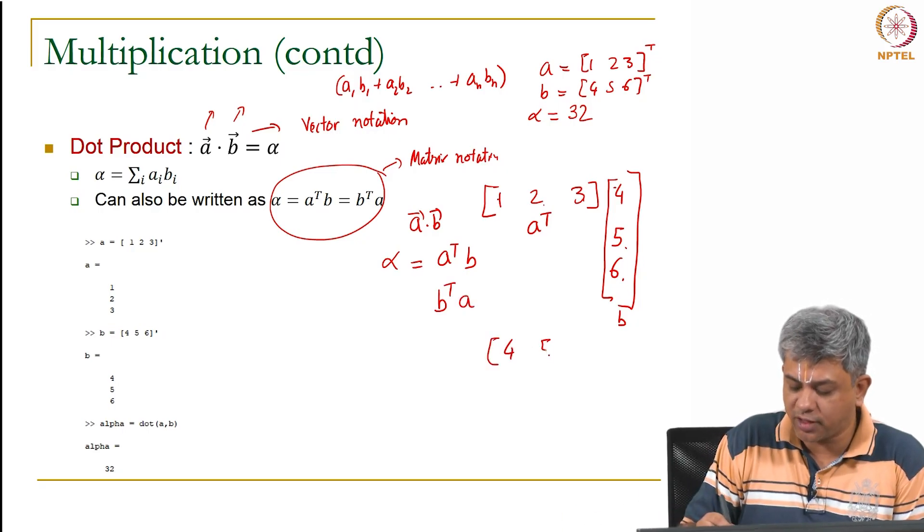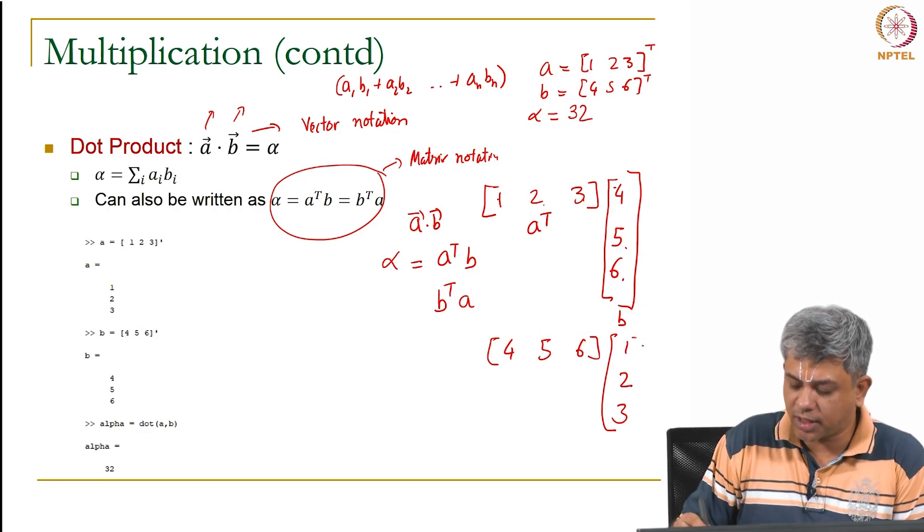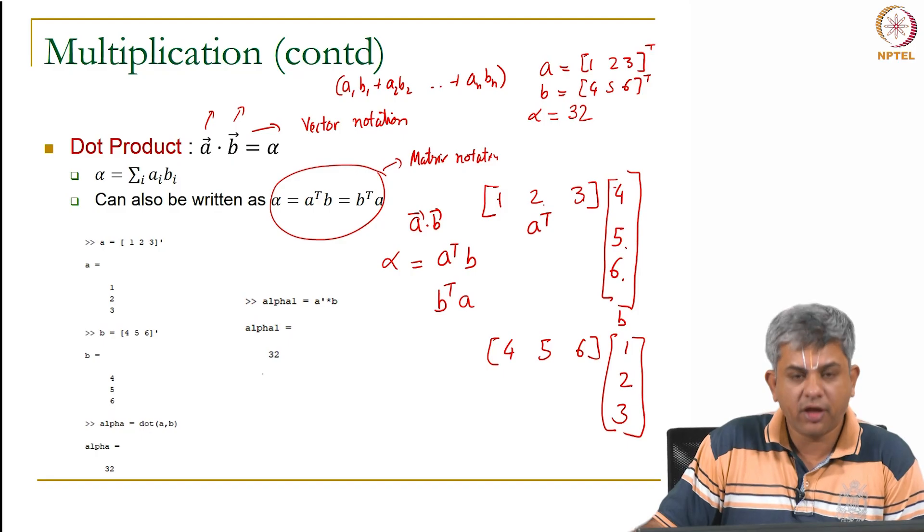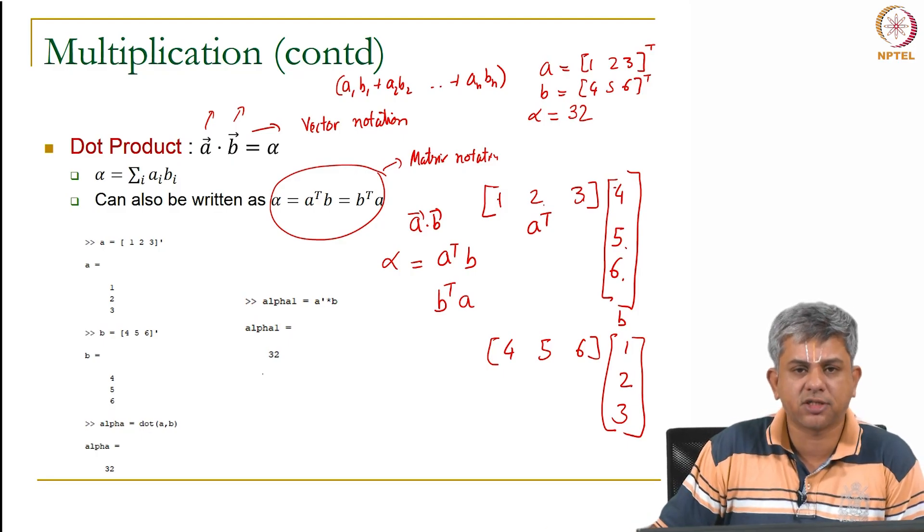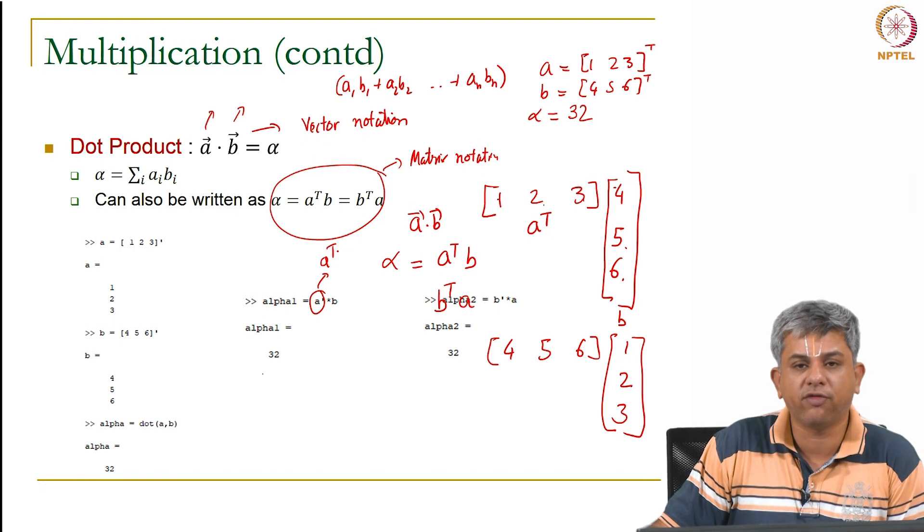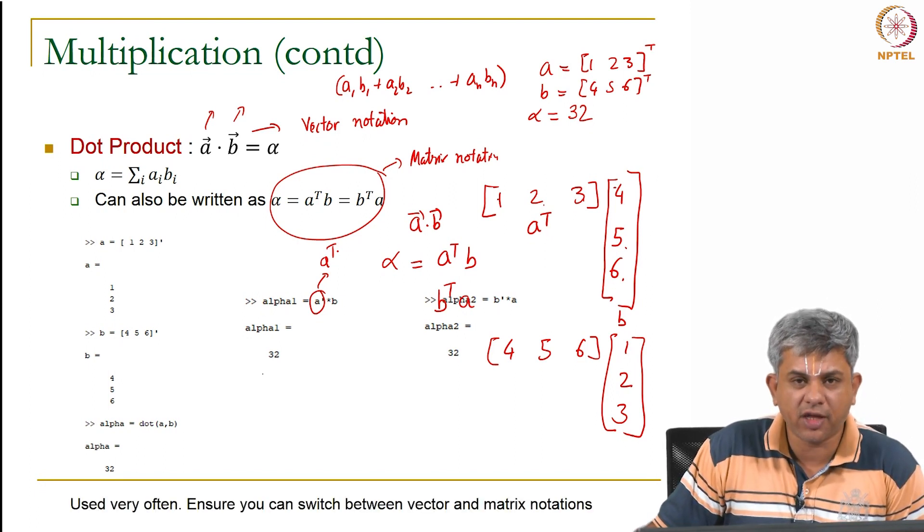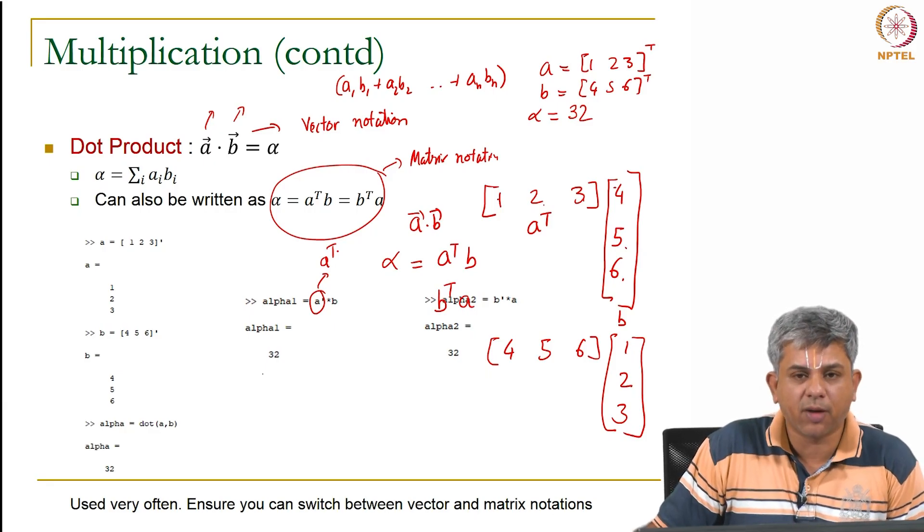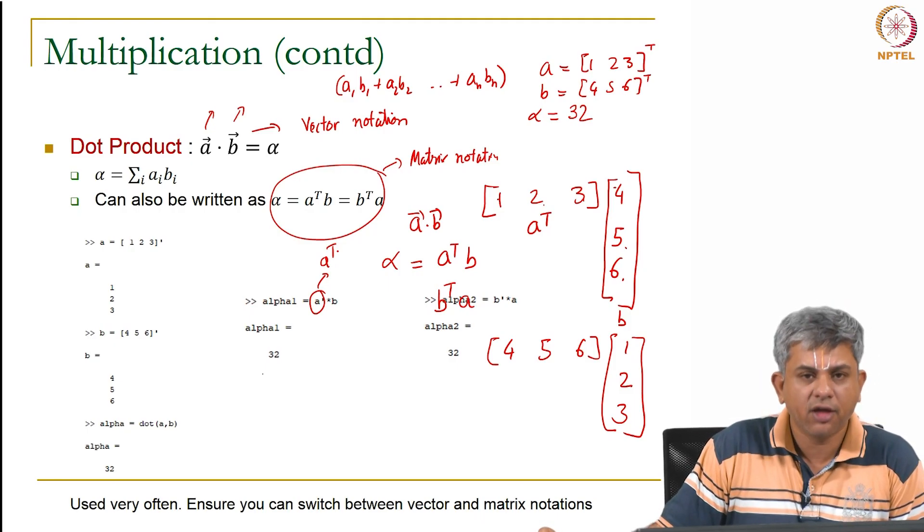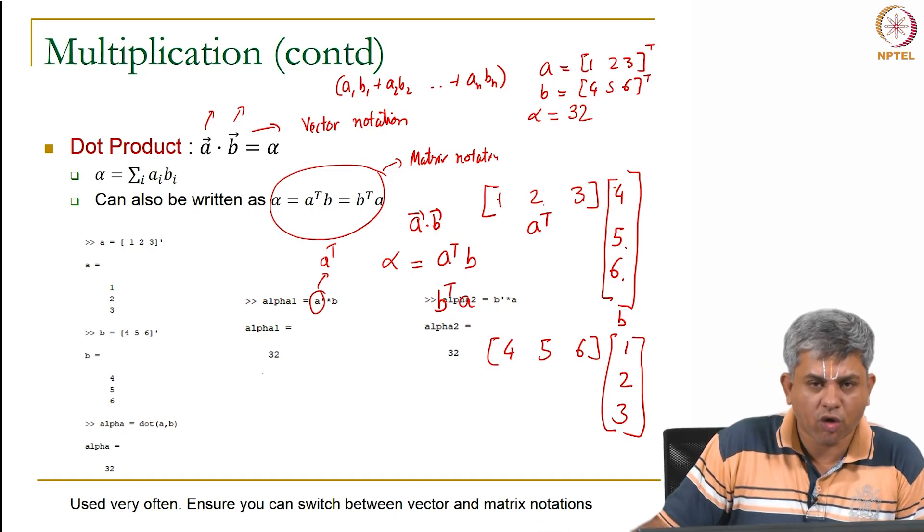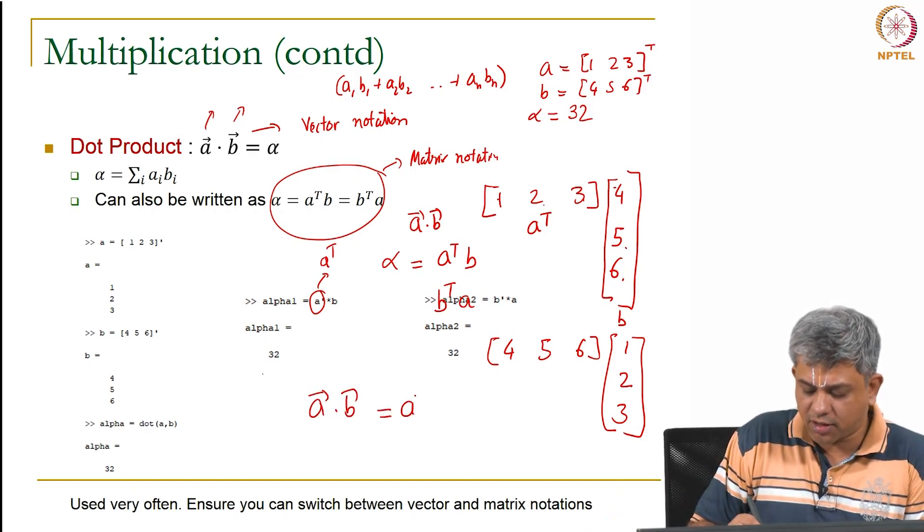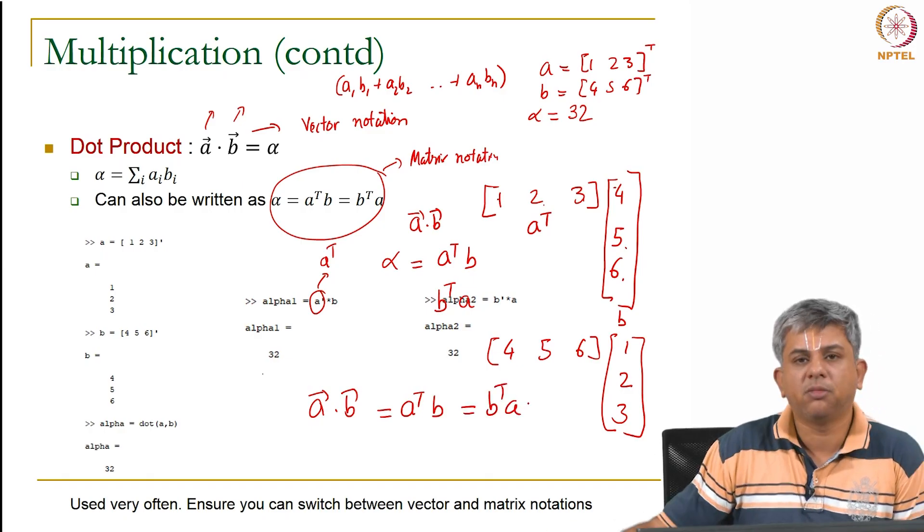So if I had written it as 4, 5, 6, 1, 2, 3 it would not have made a difference because I am still making the same product. So we will be using this kind of notation repeatedly. So if I do A transpose times B, transpose in MATLAB is represented by a prime, so A prime here denotes A transpose. Obviously that is going to give you the same result. So this kind of thing we will be using extremely often. So please get comfortable with this, which is denoting a dot product between two vectors as A transpose B or B transpose A and also as A dot B. So all these three will be used interchangeably.